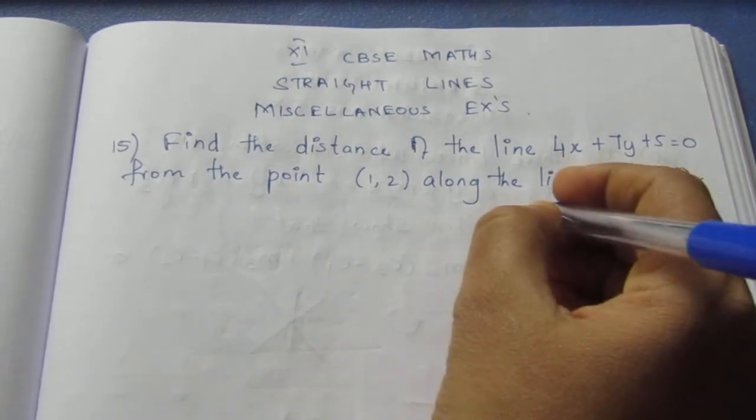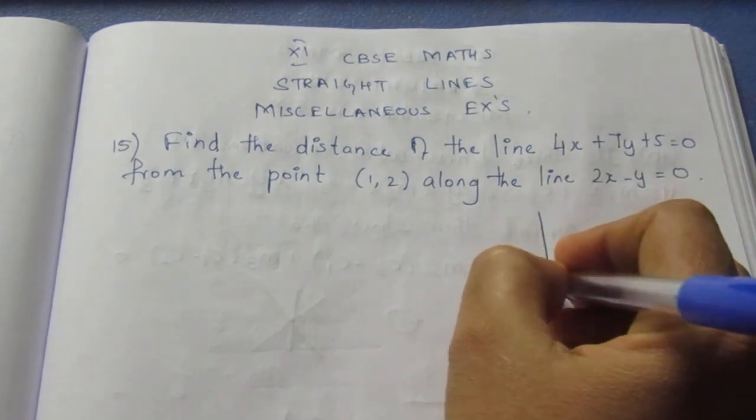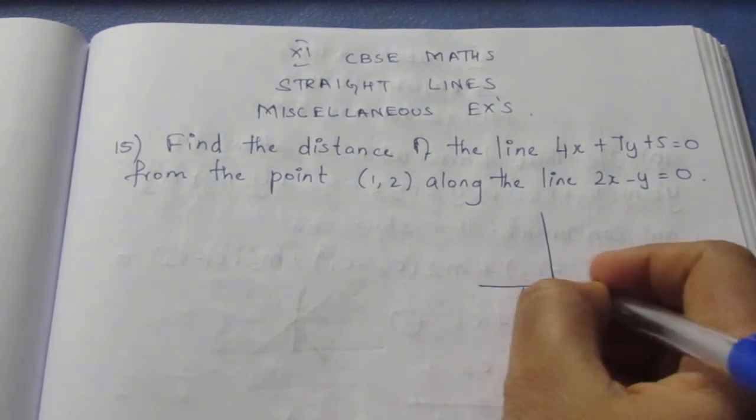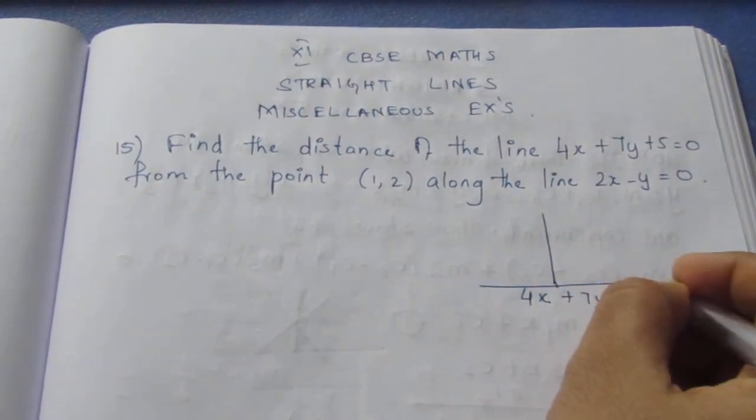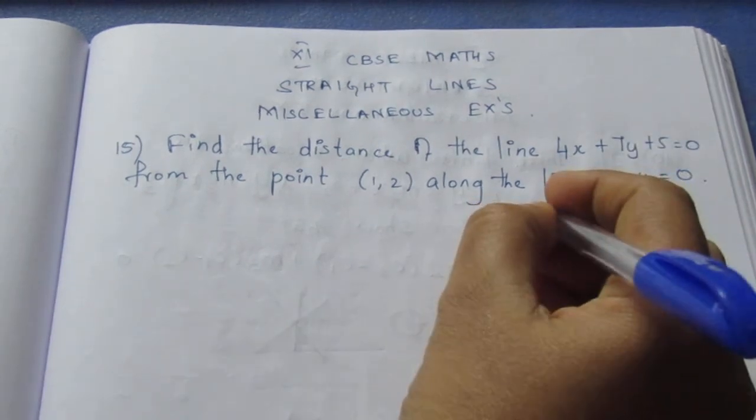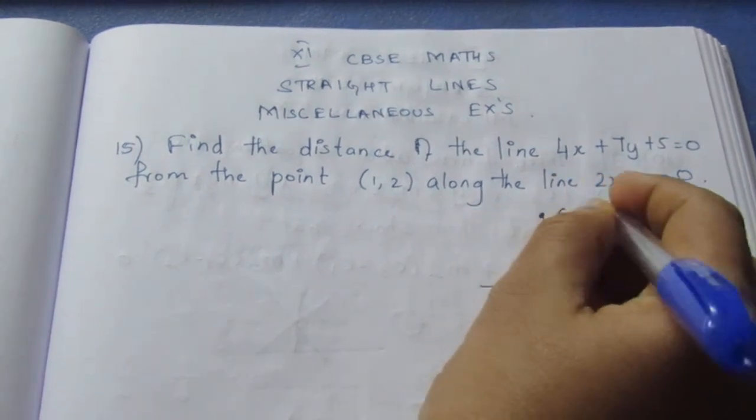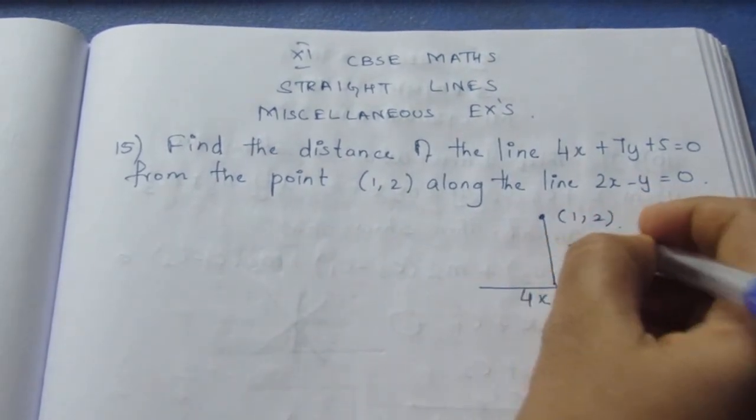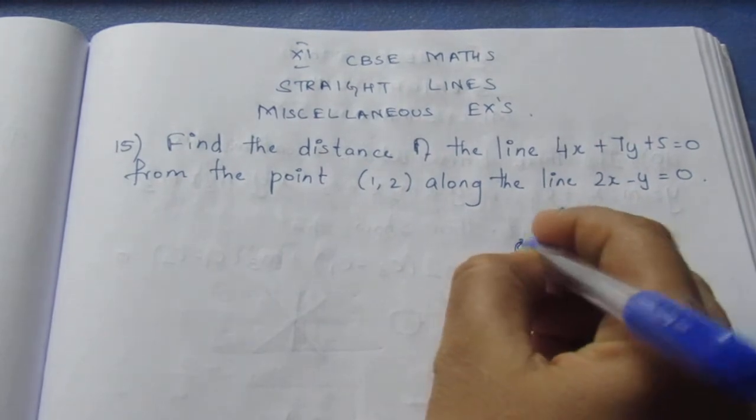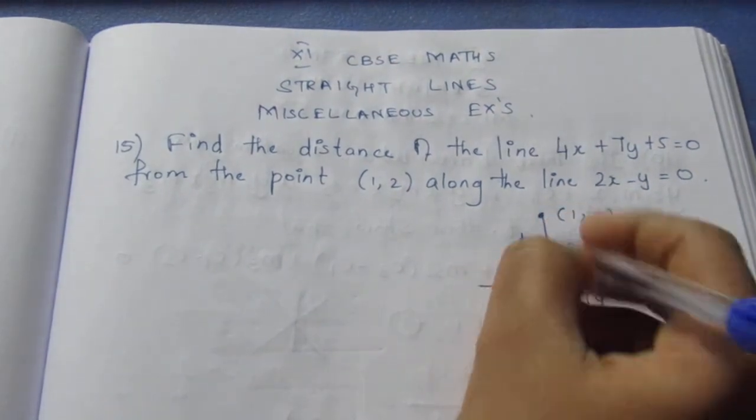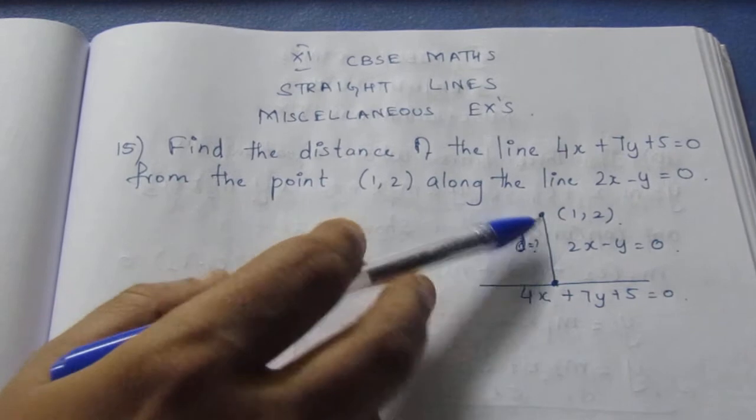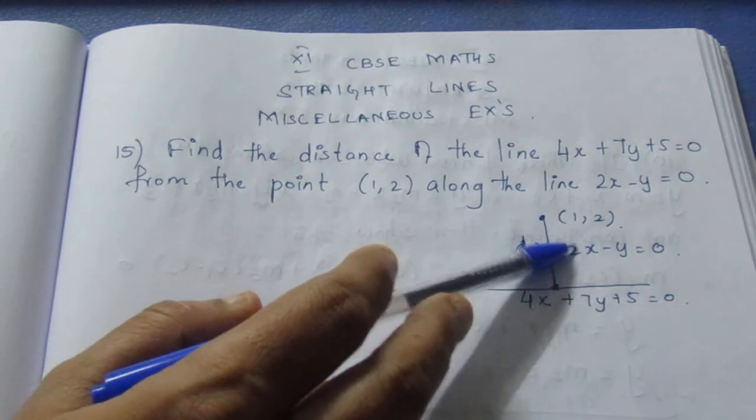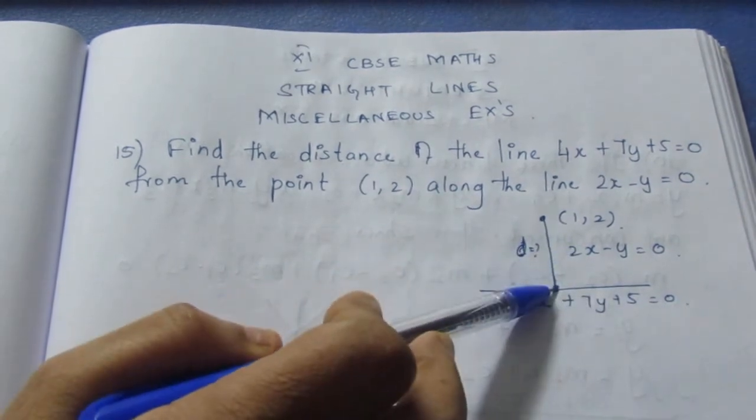Here they are given distance of the line 4x plus 7y equals 0. I am drawing a rough diagram from the point (1,2) along the line. This line equation they have given it to be 2x minus y equals 0. So they are asking the distance of this line segment from here to here. This point intersects on the line. Now we know the equation of this line and this line. The intersection point is here.